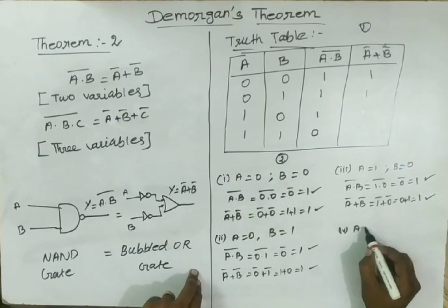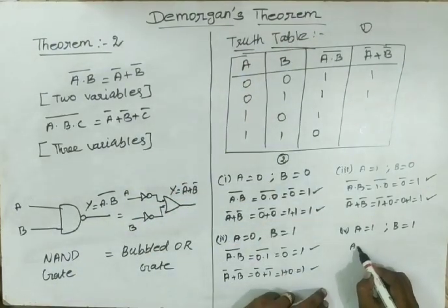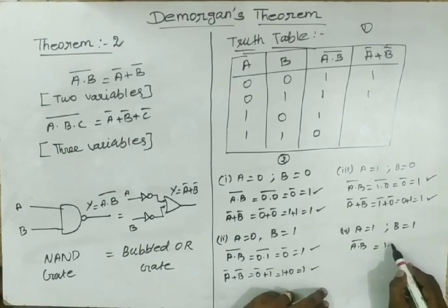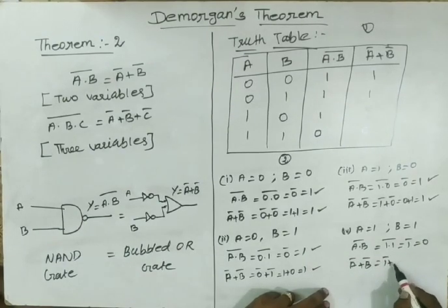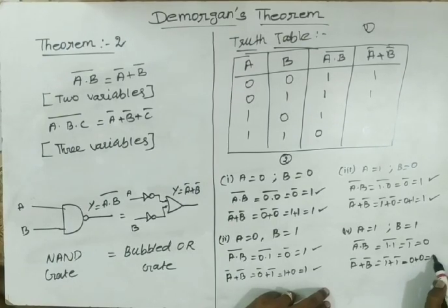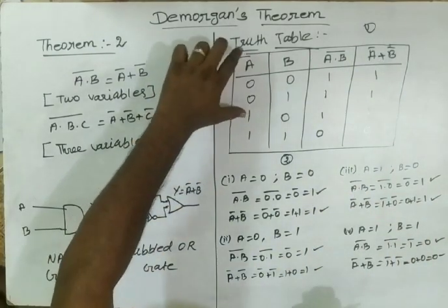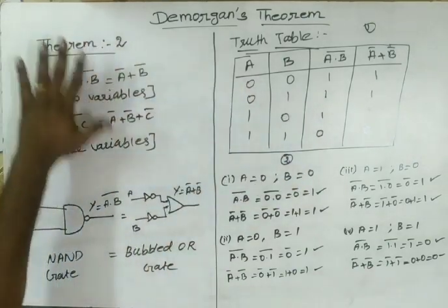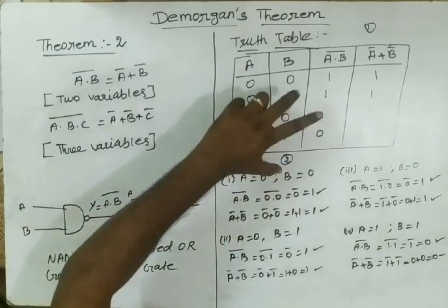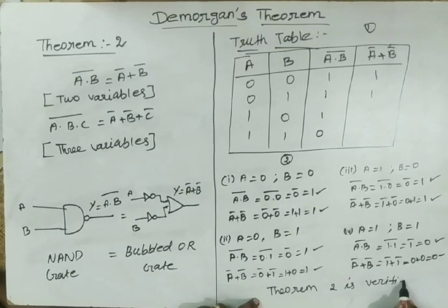Fourth case: A=1, B=1. Left hand side: A dot B whole bar = 1 dot 1 whole bar = 1 bar = 0. Right hand side: A bar plus B bar = 1 bar plus 1 bar = 0 plus 0 = 0. Left hand side 0, right hand side 0 — verified. De Morgan's Theorem 2 verified through equation, circuit diagram, and truth table.